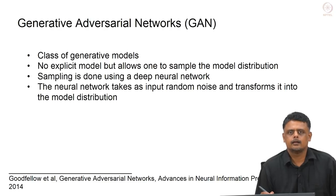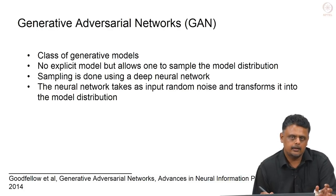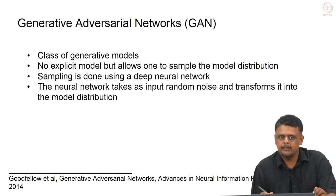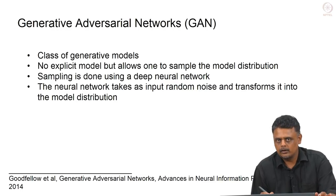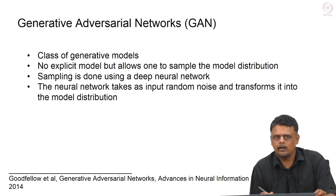Hello and welcome back. In this video we will look at generative adversarial networks. These are a class of generative models which do not explicitly model the data distribution, but rather provide a sample from it, and the sampling is performed using a deep neural network. The neural network which provides the samples takes as input a random noise vector and then maps it into a sample of the model distribution.